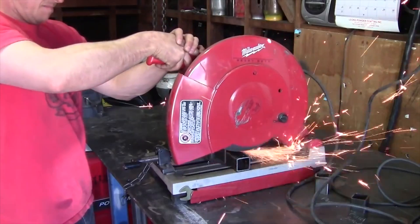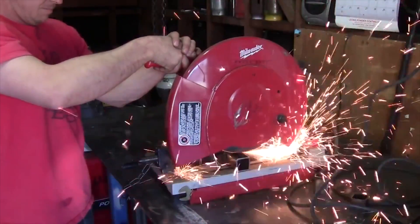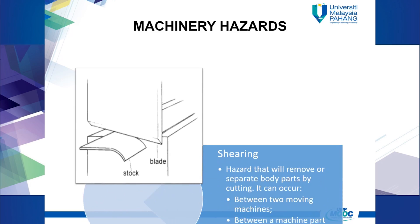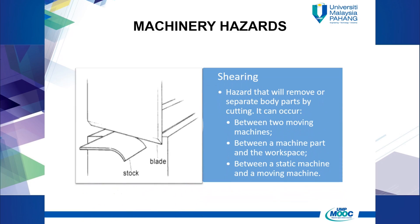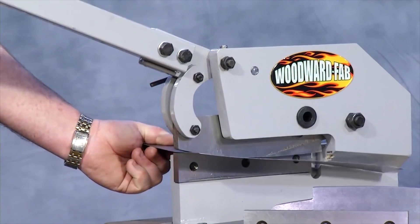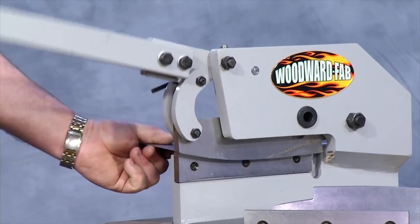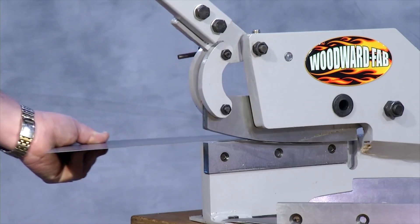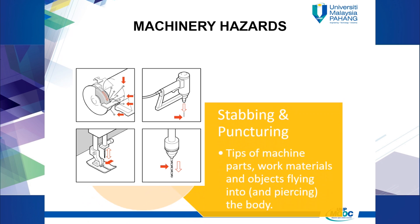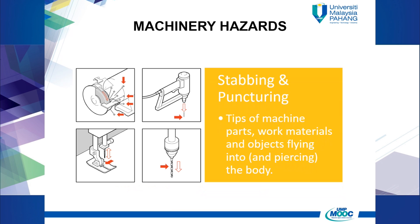Cutting hazard is a hazard that occurs when you have contact with a sharp surface, such as a saw blade, a knife, or a cutting disc. Shearing hazard is a hazard that will remove or separate body parts by cutting. Shearing hazard can occur between two moving machines, between a machine part and the workspace, and between a static machine and a moving machine.